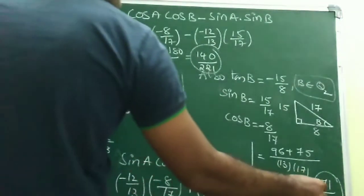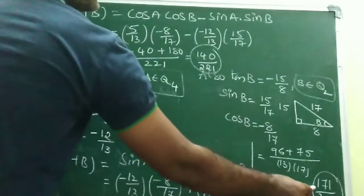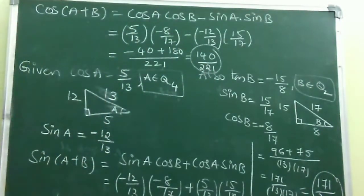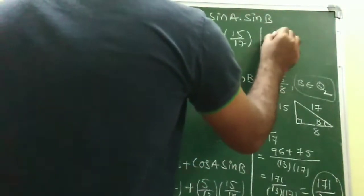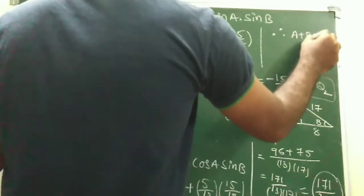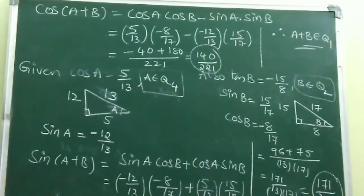We got sin(A+B) = 171/221 (positive) and cos(A+B) = 140/221 (positive). Where are both sine and cos positive? Not in Q2 (sine positive, cos negative), not in Q3 (both negative), not in Q4 (cos positive, sine negative). Both positive only in Q1. Therefore, A+B belongs to the first quadrant.